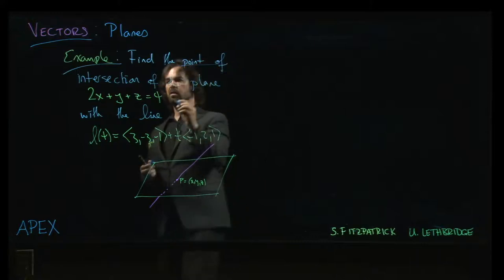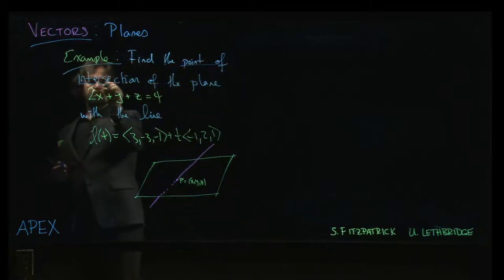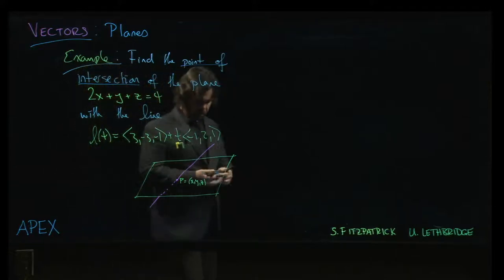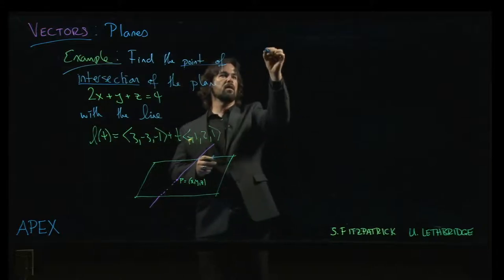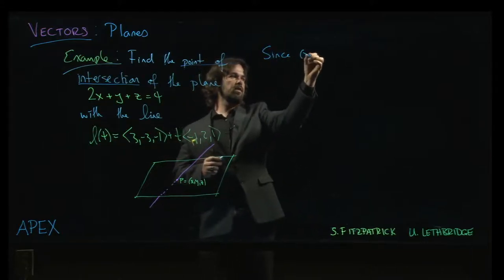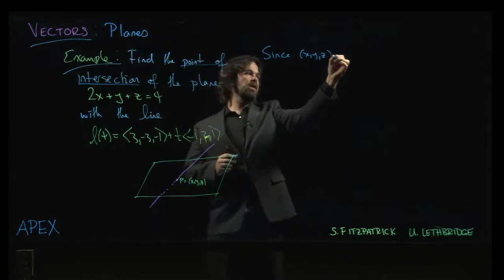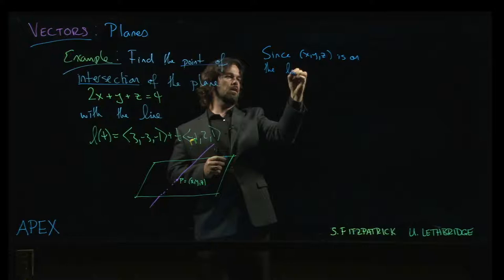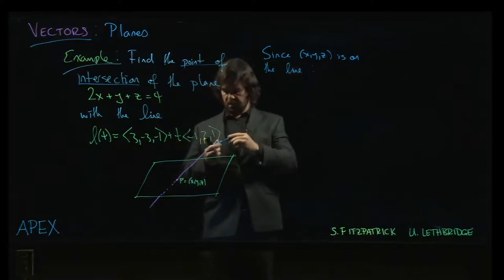Well, a point of intersection is a point which is common to both the line and the plane. And since we know that this point x, y, z is on the line, well, what does that tell us?